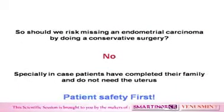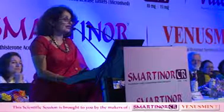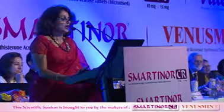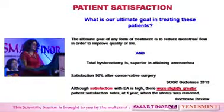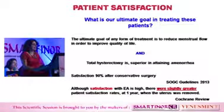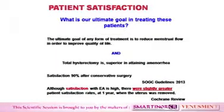For endometrial cancer patients, there was a false negative rate of 7.6%, and 37% of patients were undergraded tumors. Studies showed only 60% of patients had half the uterine cavity curetted and 16% only a quarter — meaning we are not sampling the whole cavity. So should we risk missing an endometrial carcinoma by doing conservative surgery? No, especially in patients who have completed their family and do not need the uterus. Patient safety is first. Our ultimate goal in treating AUB patients is to reduce menstrual flow to improve quality of life, and total hysterectomy is superior in attaining amenorrhea.